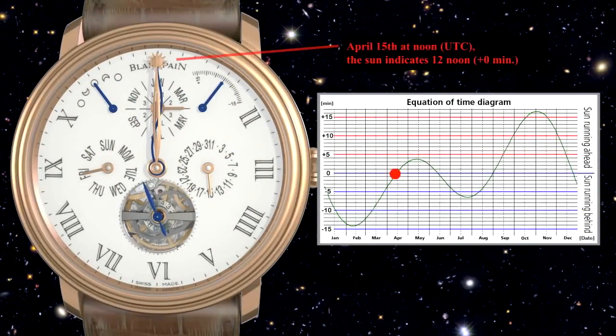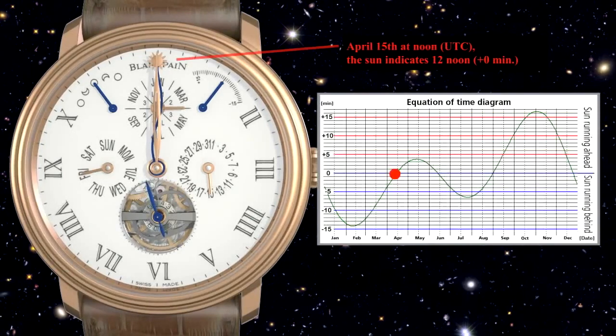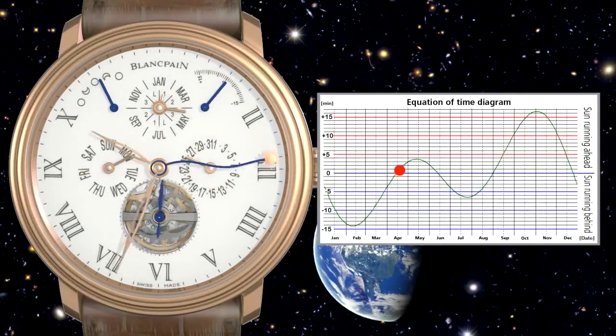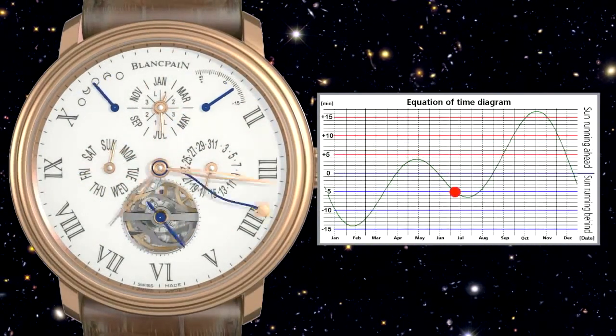Mean solar time is the average time throughout the year for the sun to do this and is the time displayed on your watch. Now you might hear it sometimes referred to as GMT.